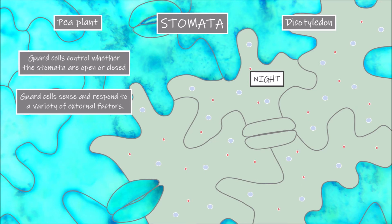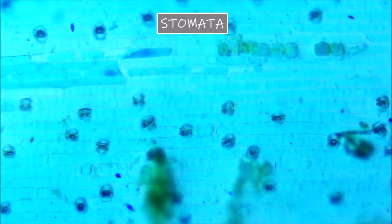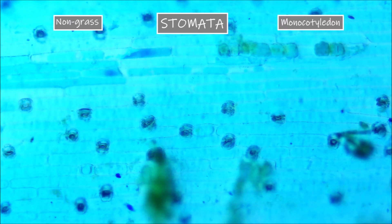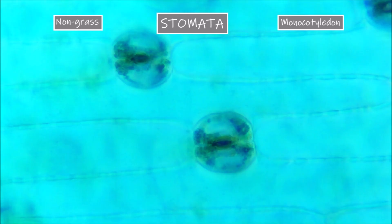In dicotyledons such as this pea plant, we have seen that the guard cells are kidney shaped. But what about the guard cells in monocotyledon plants? If we take a look at this non-grass monocotyledon, again we can see a whole bunch of oval shaped structures, which are again the guard cells that surround the stomatal opening. Unlike in the dicotyledon leaf surface, the epidermal cells in monocots are more regular and rectangular in shape. If we go up to a higher magnification we can see that although they are slightly different to those seen in the pea plant, the guard cells still have a kidney shape.